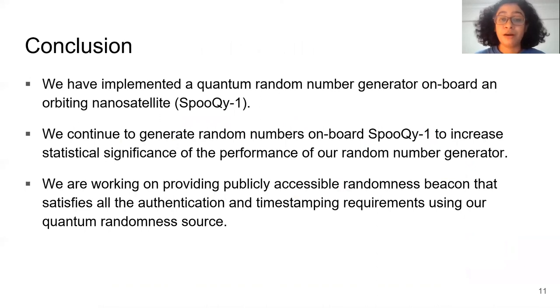I have come to the concluding part of my presentation. Let's go through the key points of our work. We have implemented a QRNG onboard our nanosatellite and we continue to generate more random numbers to increase our confidence in the performance. Right now we are not publishing any randomness beacon from our QRNG, but we are working on that. There are many randomness beacons available online. NIST has its own that it updates regularly. We intend to join this consortium for distributing public randomness beacons and are working on meeting all requirements like timestamping and authentication.